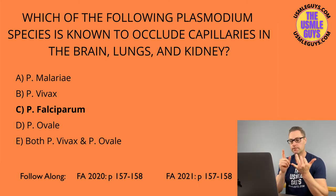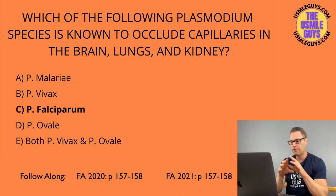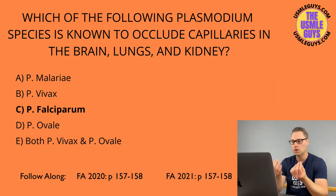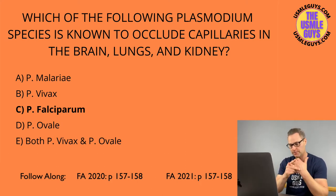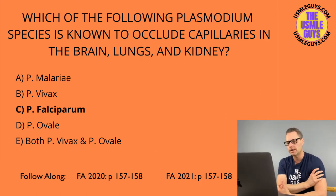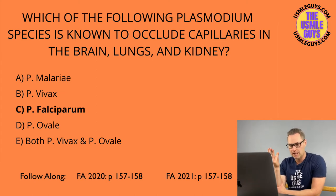Treatment includes chloroquine for sensitive species. For severe and life-threatening cases, we can use IV quinidine or artesunate. For ovale and vivax, add primaquine for the hypnozoite. Before giving artesunate or primaquine, test for G6PD deficiency. A few more protozoa to cover include Trypanosoma cruzi, Leishmania, and Trichomonas vaginalis.